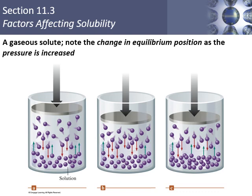Here's a picture showing what happens when we increase gas pressure above a liquid. At equilibrium, as many molecules enter the solution as leave. When pressure increases, more molecules go in than come out. The system then re-establishes a new equilibrium with more gas dissolved. That's exactly what happens when bottling Coca-Cola — they cap it at high CO₂ pressure, and it stays that way until you open it.